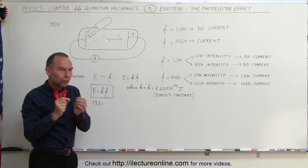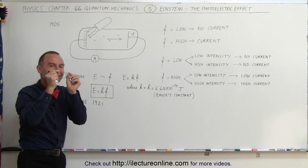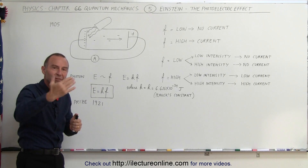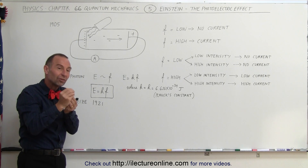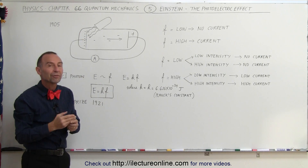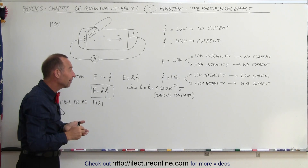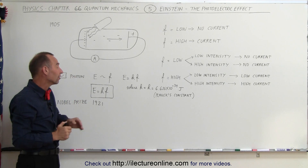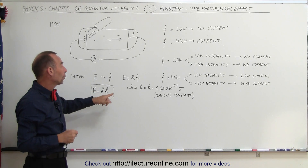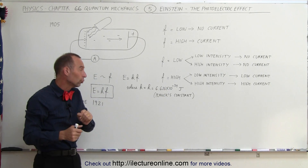It turned out that to set an electron free, each electron had to receive a single photon with enough energy to free it. A continuous stream of energy at insufficient frequency could not be accepted by the electrons to free them from the cathode and produce a current. This proved in 1905 that energy was indeed quantized — that energy equals Planck's constant times the frequency.